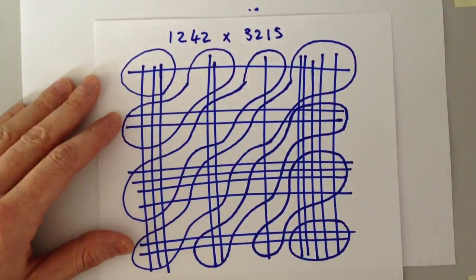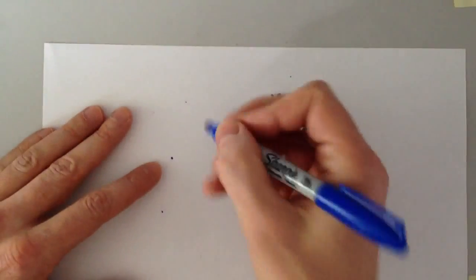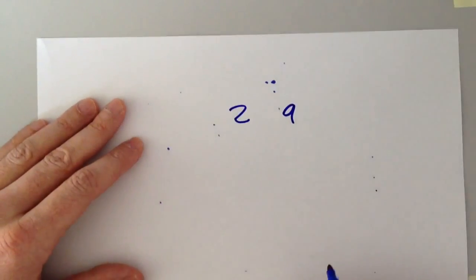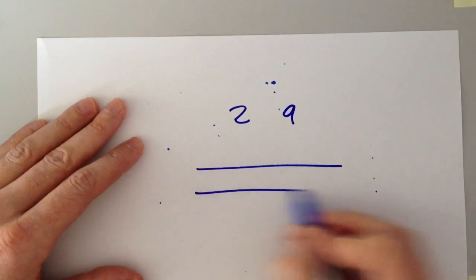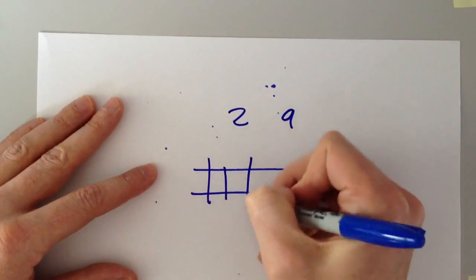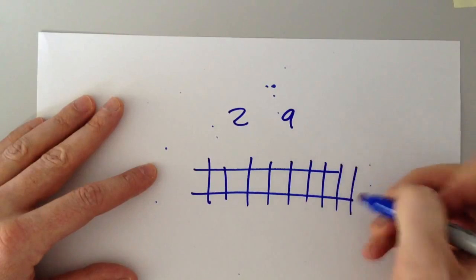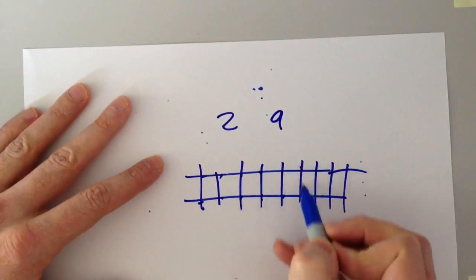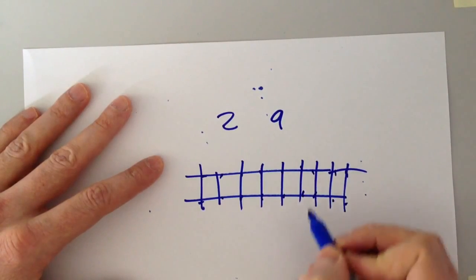It scales to any figure you like. And also, if a child is in an exam and forgets even the basics, what's 2 times 9? They can calculate that in the same way, by counting the intersects: 18.